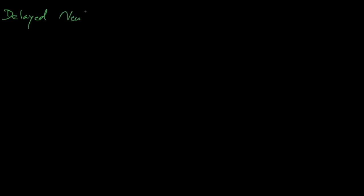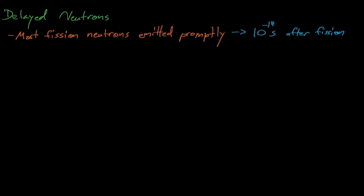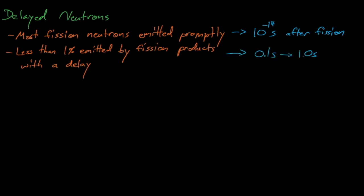Let's talk about delayed neutrons. Most of the neutrons in the reactor are emitted promptly, which means that they're emitted about 10 to the minus 14 seconds after a fission event occurs. But less than 1% of all fission neutrons are emitted with a delay somewhere between 0.1 and 1 second. These neutrons are known as delayed fission neutrons, and they're actually not emitted by fission despite their name. They're actually emitted by neutron-rich fission products that begin to undergo radioactive decay. Because these fission products have too many neutrons to be stable, sometimes they decay by emitting a neutron.